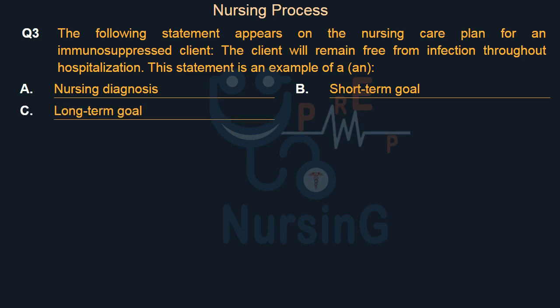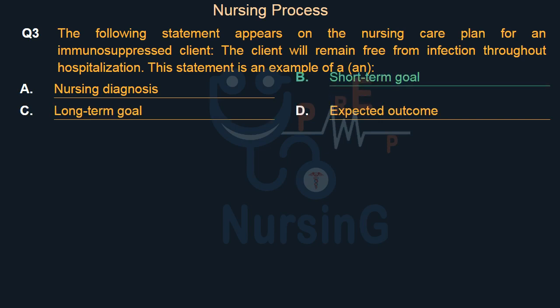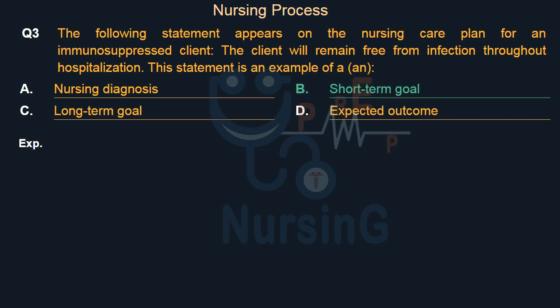Option C: Long-term goal. Option D: Expected outcome. Right answer is Option B: Short-term goal.